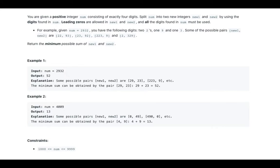Explanation: Some possible pairs new1, new2 are 29 and 23, 22 and 93. The minimum sum can be obtained by the pair 29, 23. 29 plus 23 equals 52.